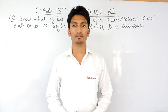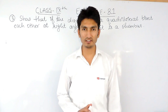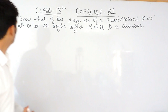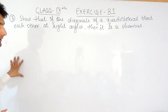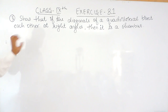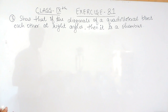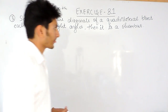Hello everyone, we are from True Maths and in this video we are going to solve the third question of exercise 8.1. The question says: show that if the diagonals of a quadrilateral bisect each other at right angles, then it is a rhombus.